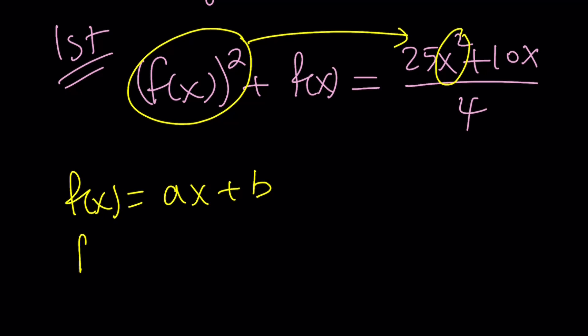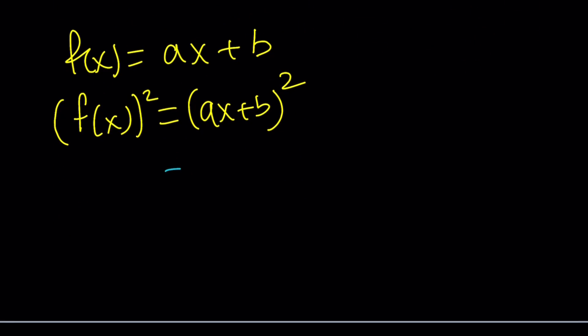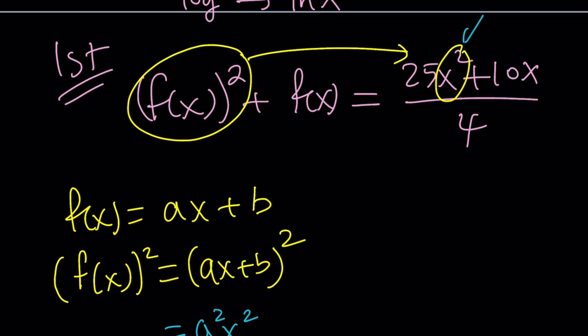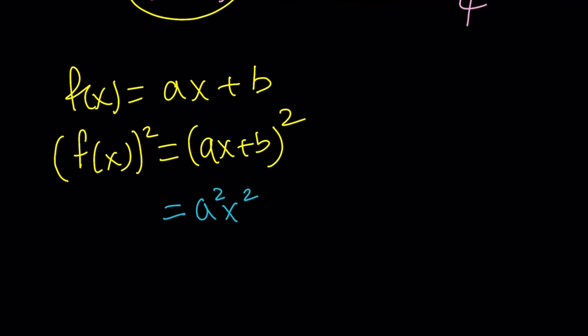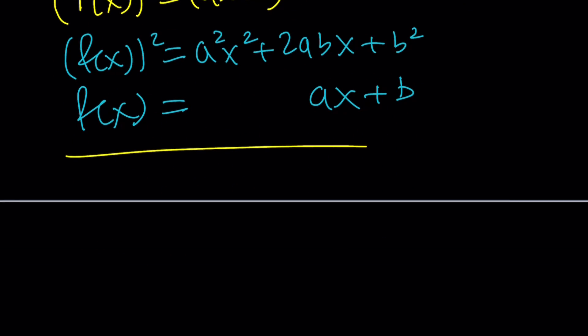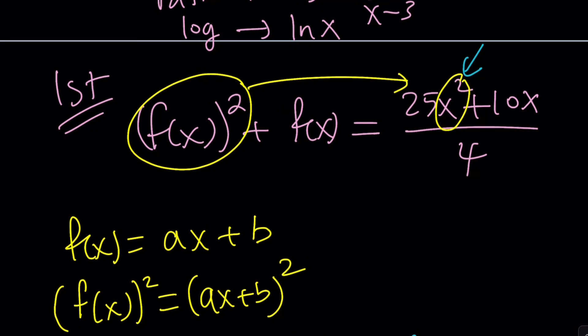So, what happens to f(x)² in this case? You have to square ax+b. And let's see what that gives us. That gives us a²x², which kind of explains the x² here. That's the only place that we're going to have it. Plus 2abx + b². This is f(x)².